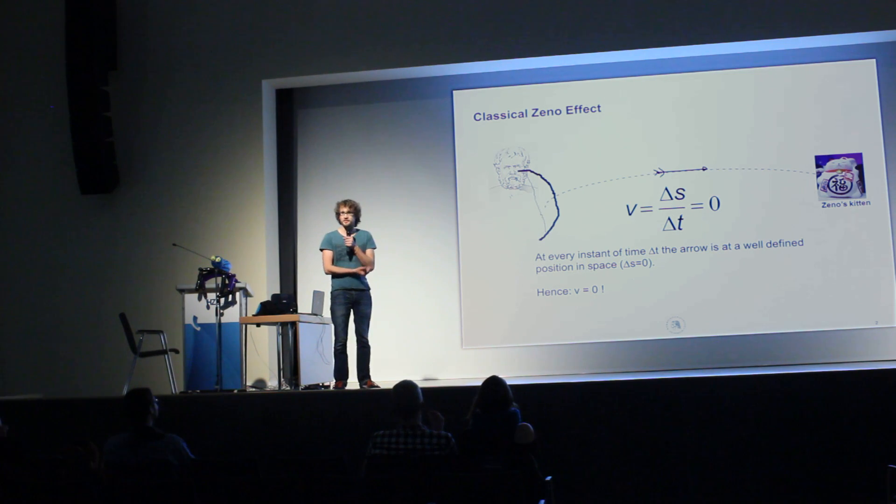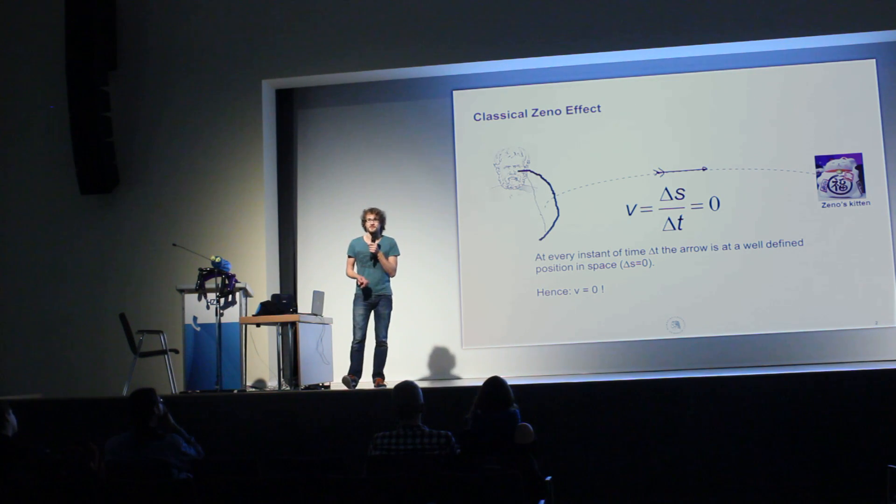For example, when you take this photo, during the exposure time, you can see the arrow is always at a well-defined position. So now you take the delta s equal zero, divided by the exposure time, what you get is zero. So motion cannot occur.